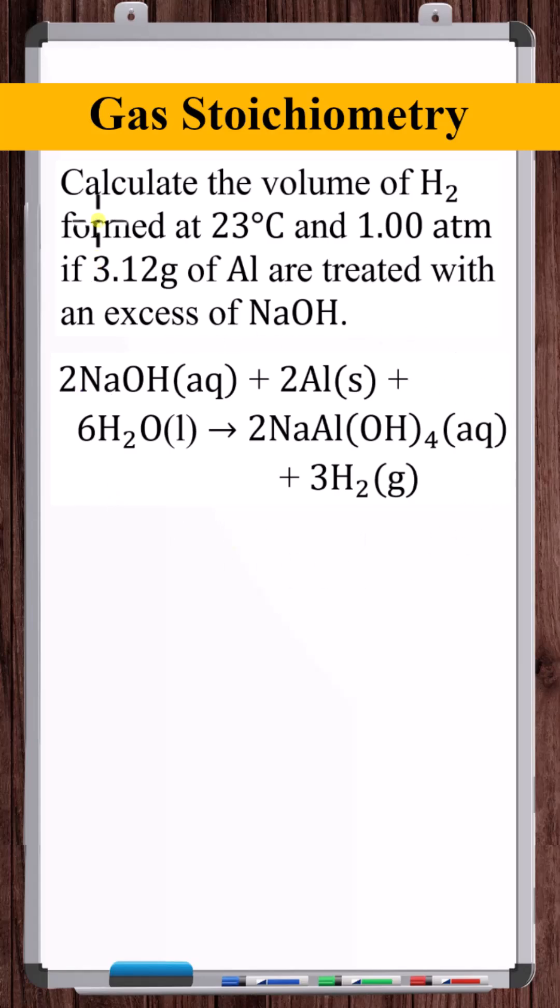For this chemical reaction, calculate the volume of hydrogen gas formed at 23 degrees Celsius and one atmosphere if 3.12 grams of aluminum are treated with an excess of sodium hydroxide.